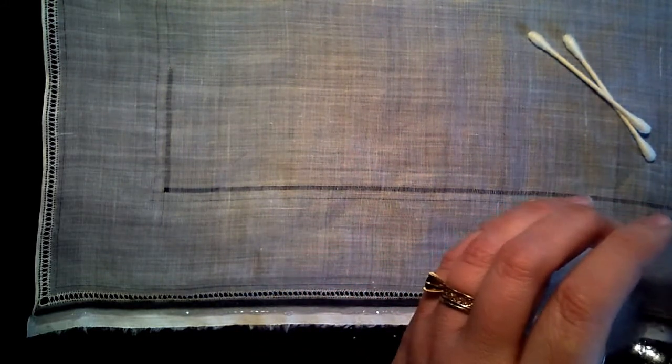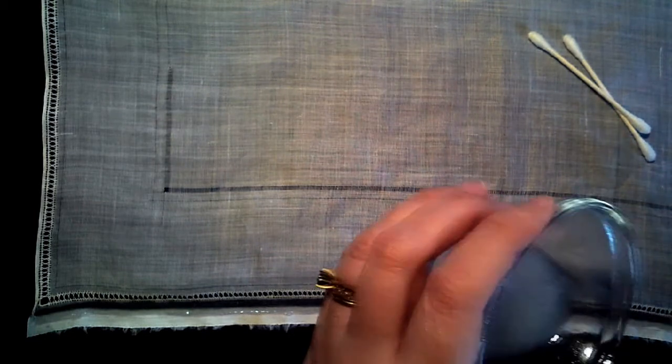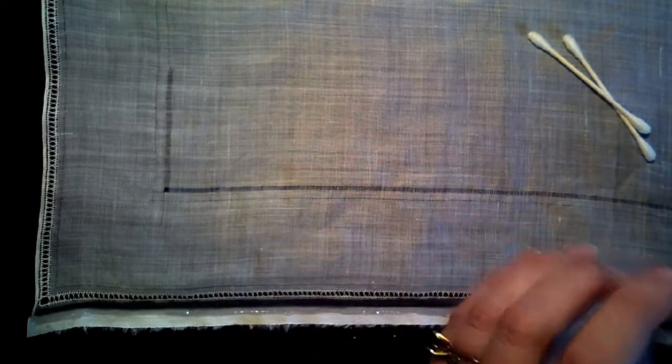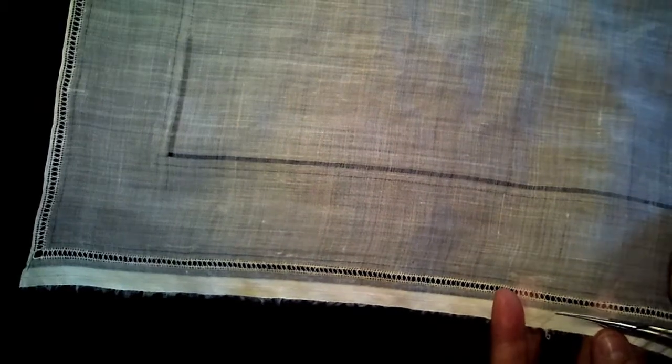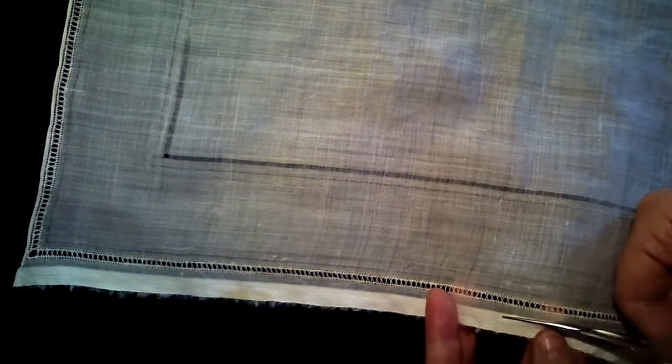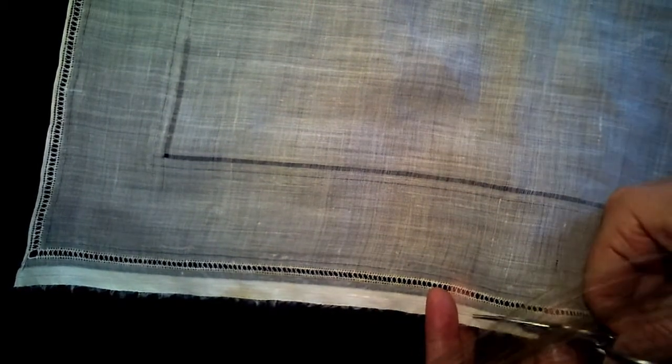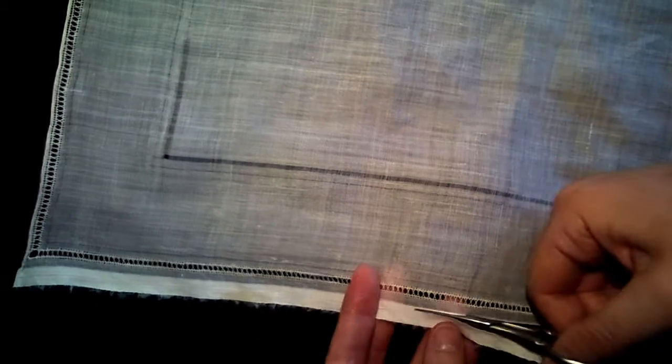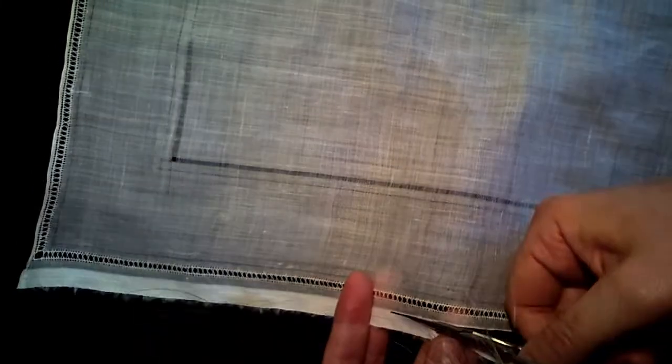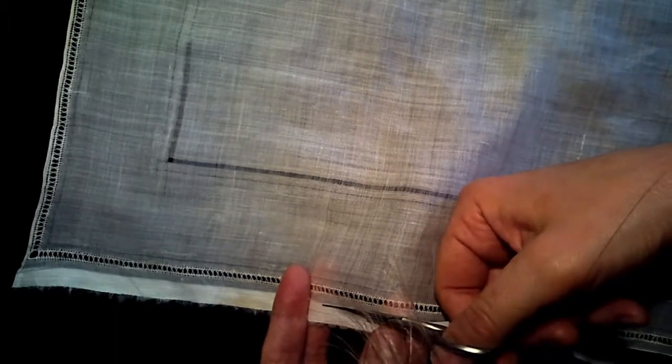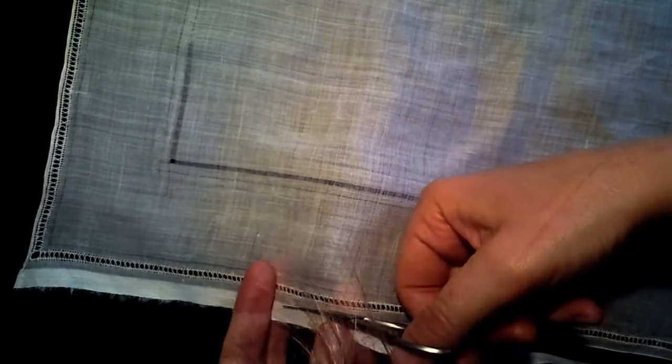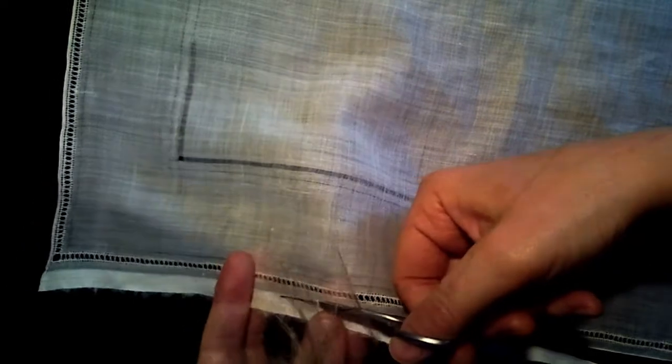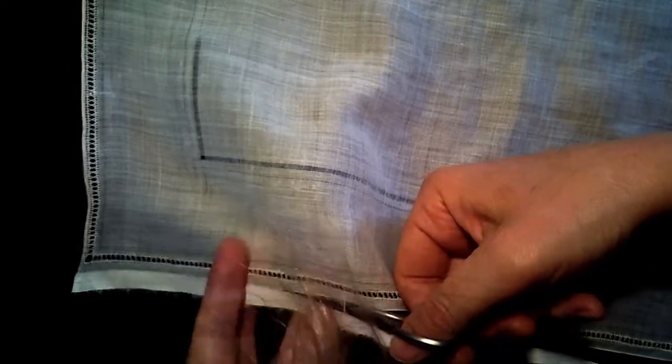Once I have let it dry and ironed it I can cut the edge off. Usually I pull a thread to have a straight line to cut to, but because this was such a dominant selvage I was able to just cut to the selvage edge.